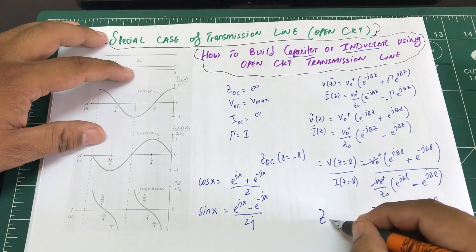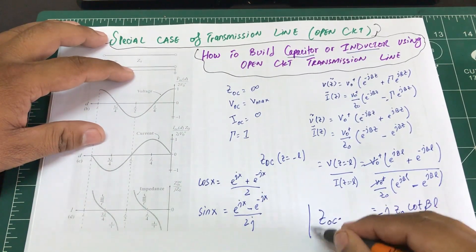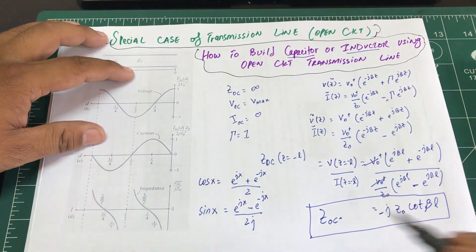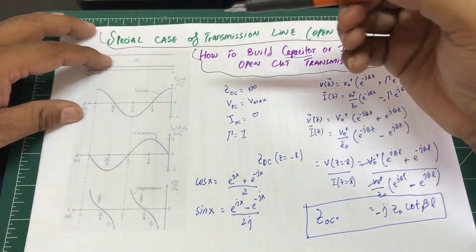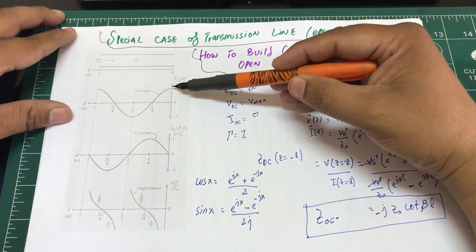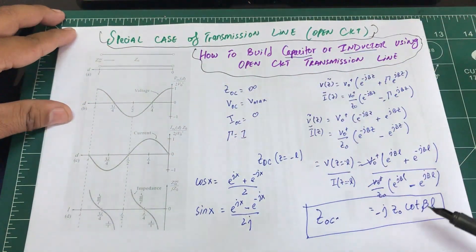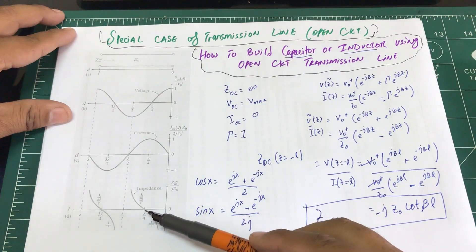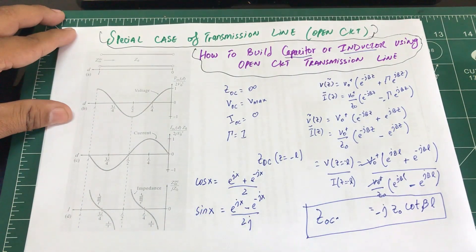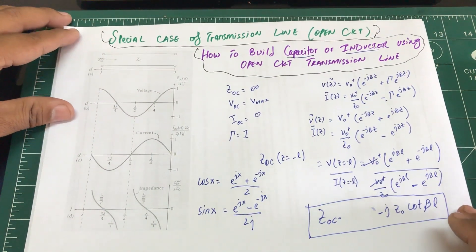Now let's look at the graph again. We have voltage which is at maxima, we have current which is minima. When I plot this, I have a graph that looks something like this for cotan.